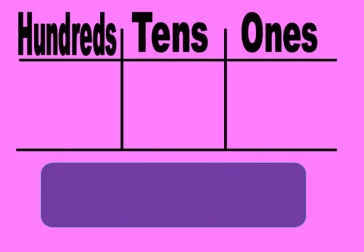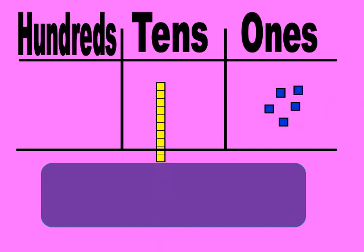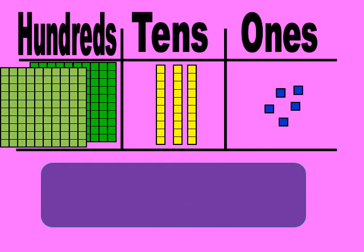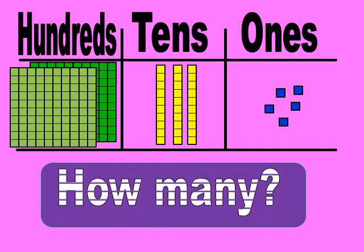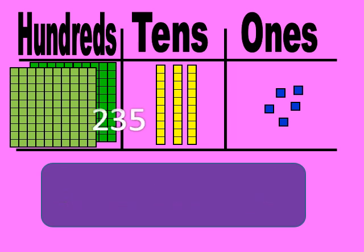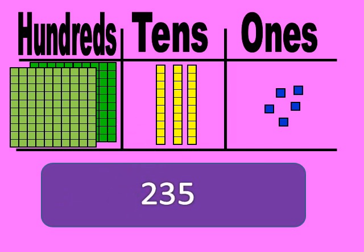Let us see this number. How many cubes of 1? 1, 2, 3, 4, 5 — five cubes of 1. Then 3 rods of 10 and 2 flats of 100. How many? It is 235.